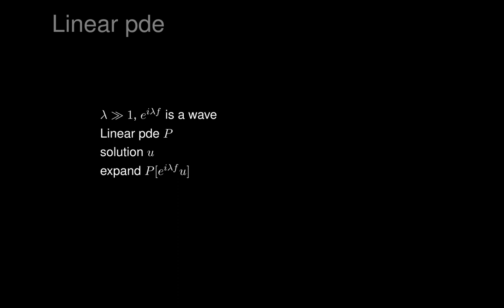Imagine P was just a single derivative in some variable x — by the product rule, you'd either hit the exponential or hit U. Similarly, for a differential operator of any order, we apply the product rule over and over again. When derivatives hit the exponential wave, they pull down a factor of i times lambda and differentiate F. Every time a derivative hits the exponential, we pull down a factor of i lambda and keep another exponential factor showing up.